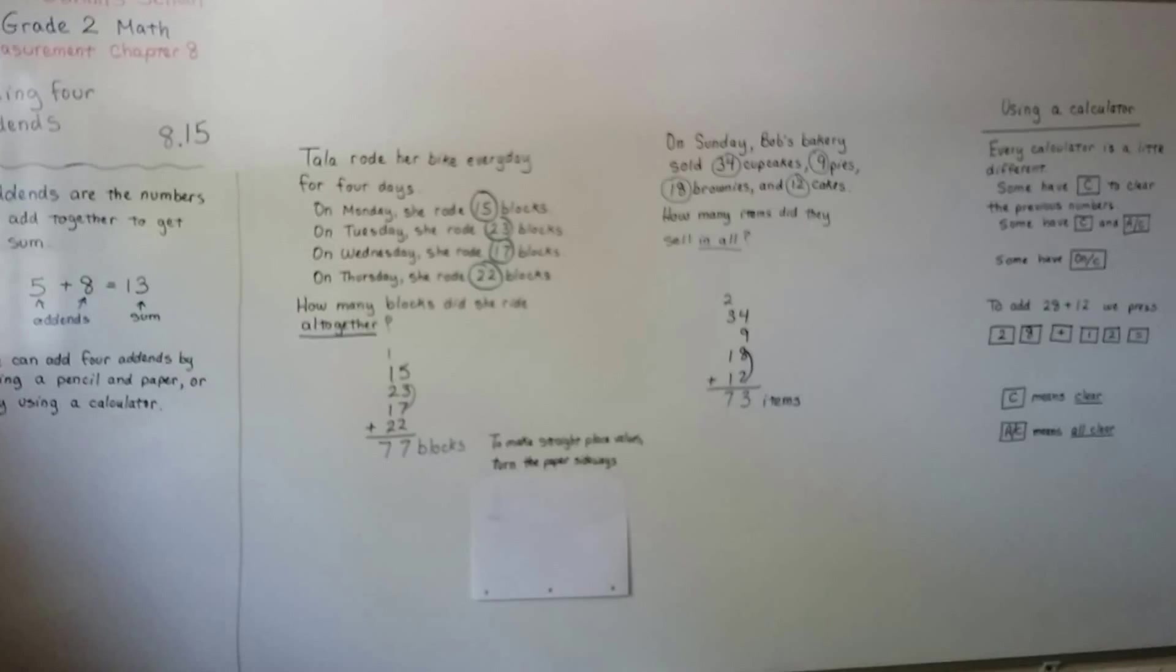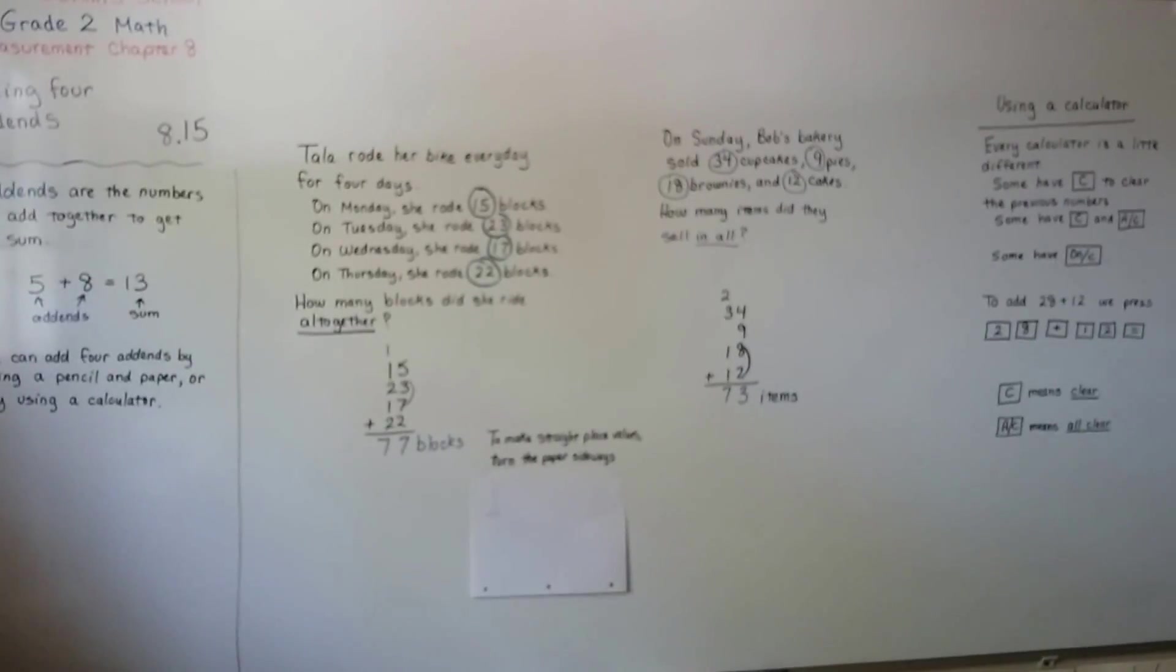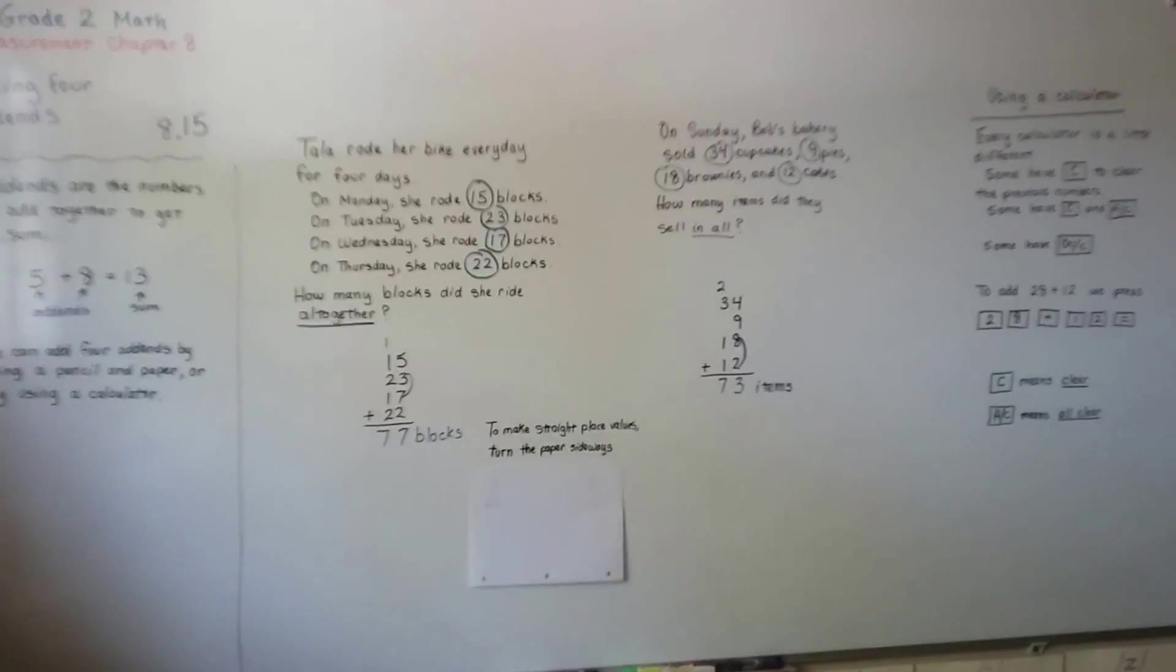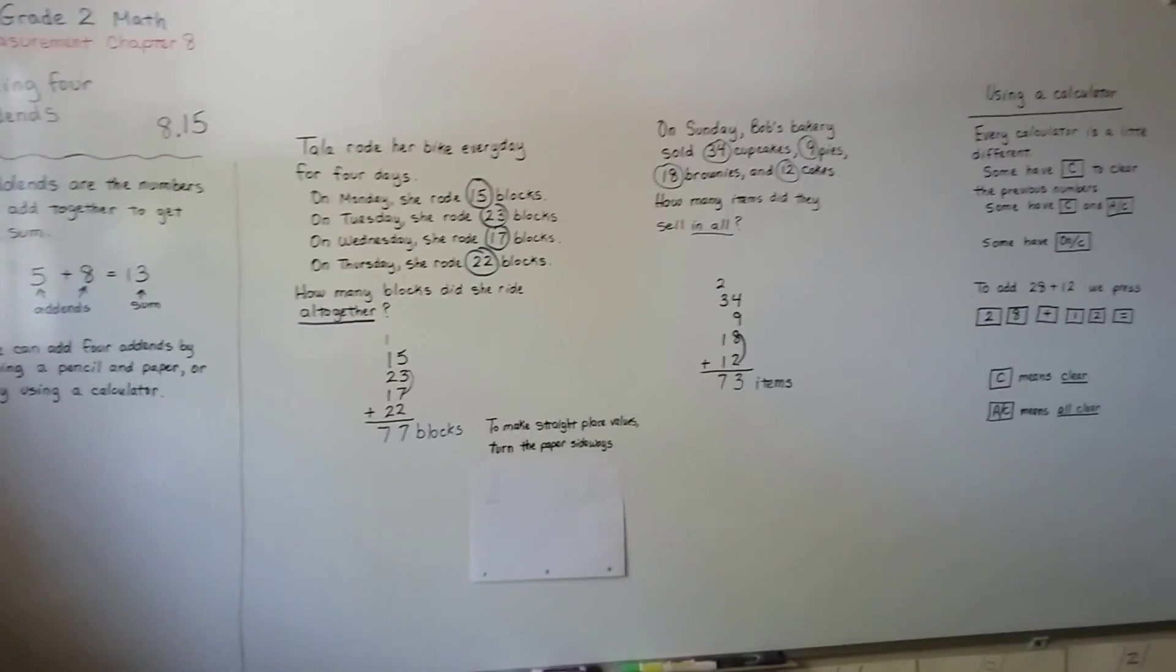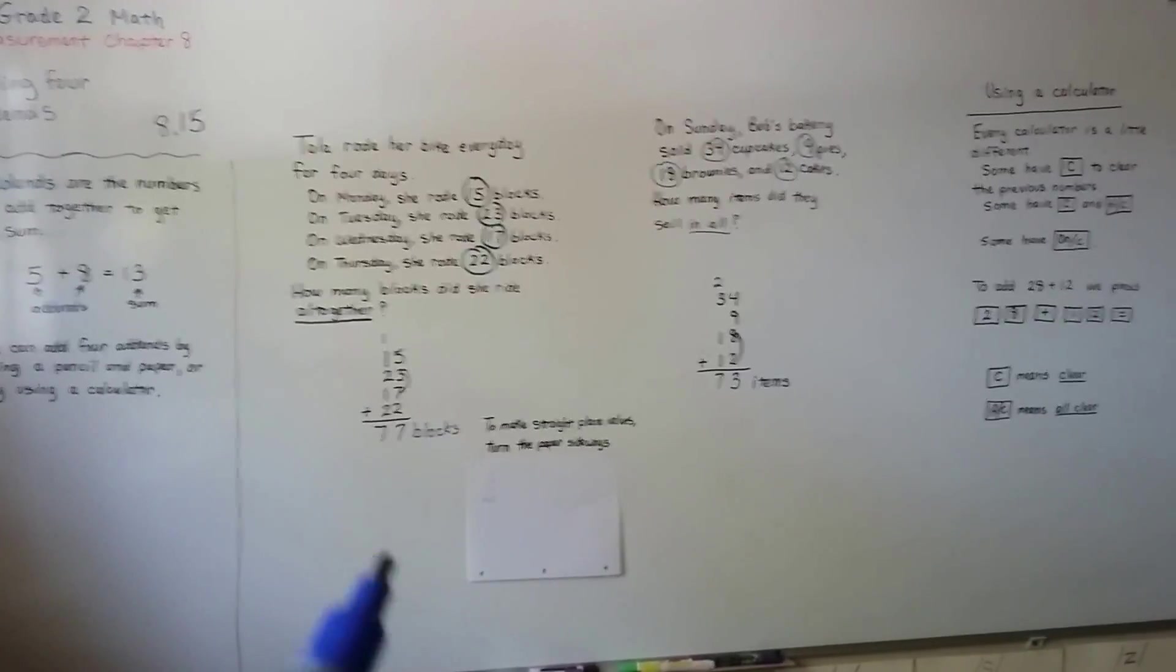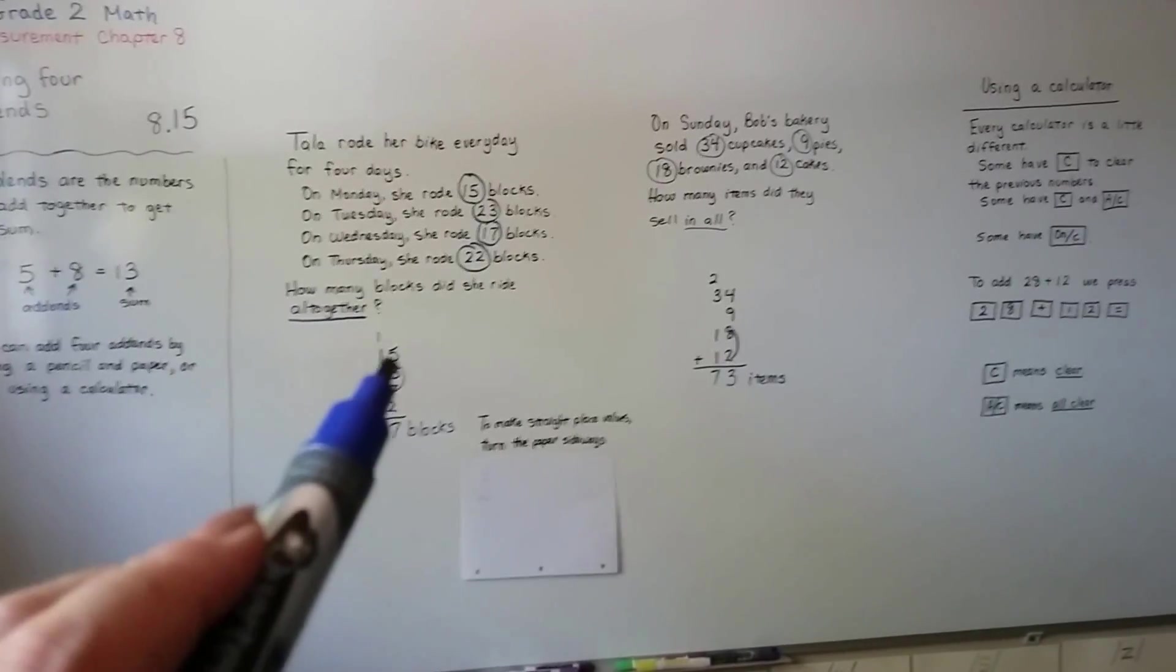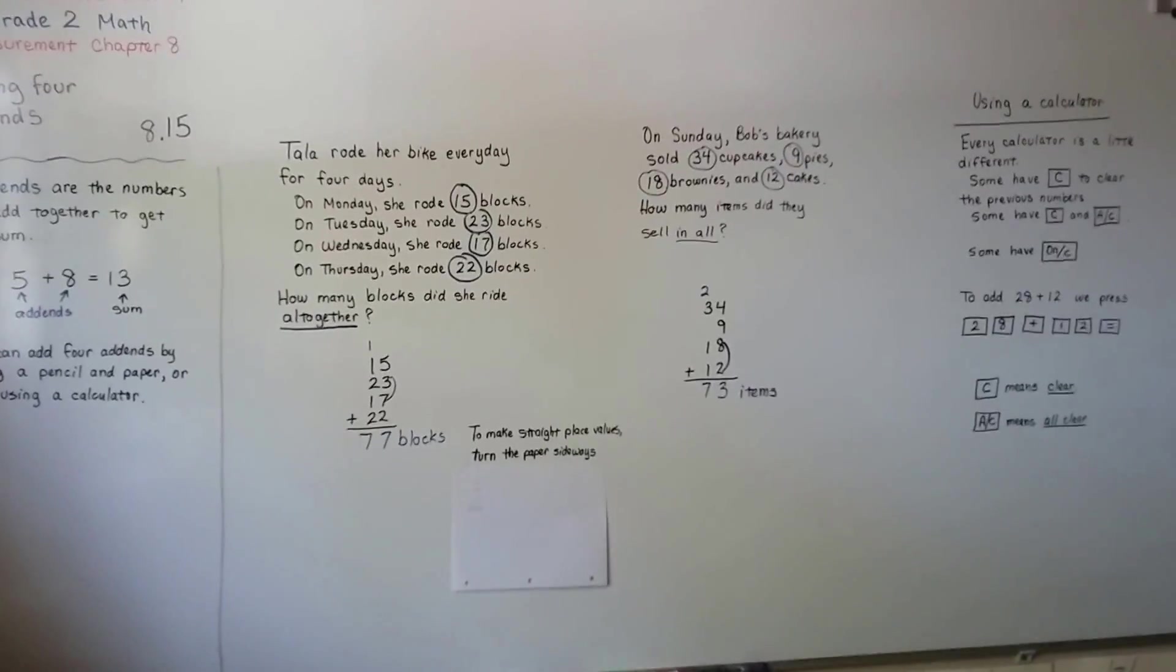So remember when you're adding several addends to keep your columns straight. Remember that you can turn your paper sideways to help you if you want. And remember to look for compatible numbers that make a 10 right away. That'll help you.